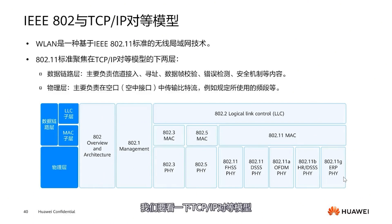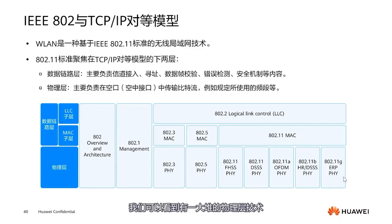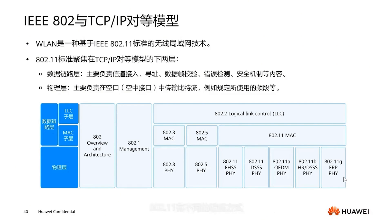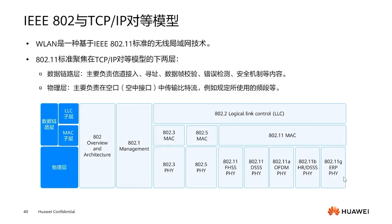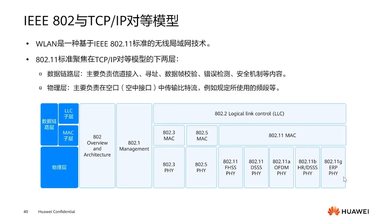We need to look at the TCP/IP peer model for WLAN key technologies. The 802.11 standard primarily focuses on the bottom two layers of the TCP/IP peer model. We can see a bunch of physical layer technologies — 802.11 has different encoding and modulation techniques. OFDM is one such modulation technique. Above is the MAC layer technology of 802.11, and above the MAC layer there is an LLC layer.